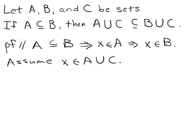If X is a member of A union C, then that implies that X can belong to A or X can belong to C. It could also be a member of both, which means it would belong to the intersection of A and C.